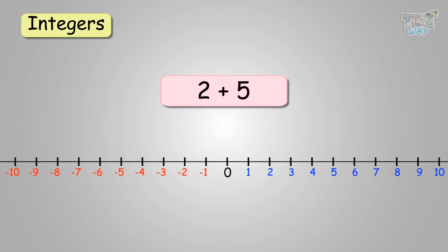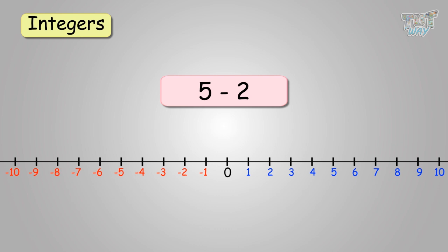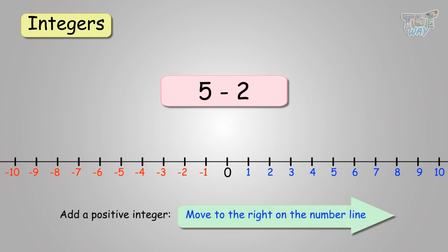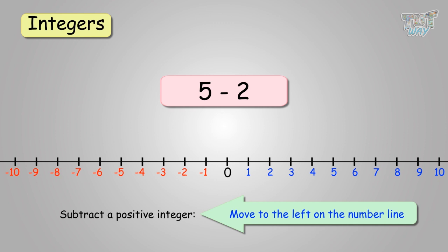Now, add 2 to 5. Start at 5 and hop 2 times. You get 7. So, 2 plus 5 equals 7. Now, you have to subtract 2 from 5. Remember, when we add positive integers, we move to the right. And whenever we subtract a positive integer, we move to the left.